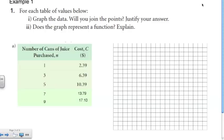Let's get right into it. This is example one. It's asking us to graph the data, asking us if we'll join the points, so essentially asking if this is a discrete or continuous graph, and asking us if the graph represents a function, which is something we're familiar with from the previous lesson.